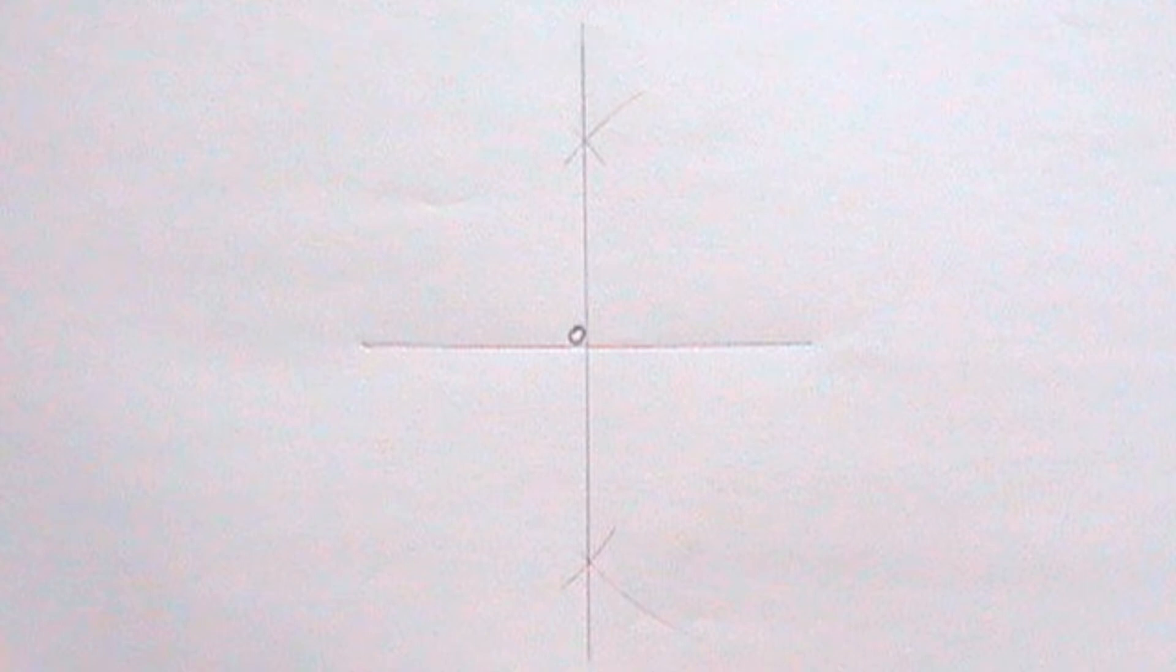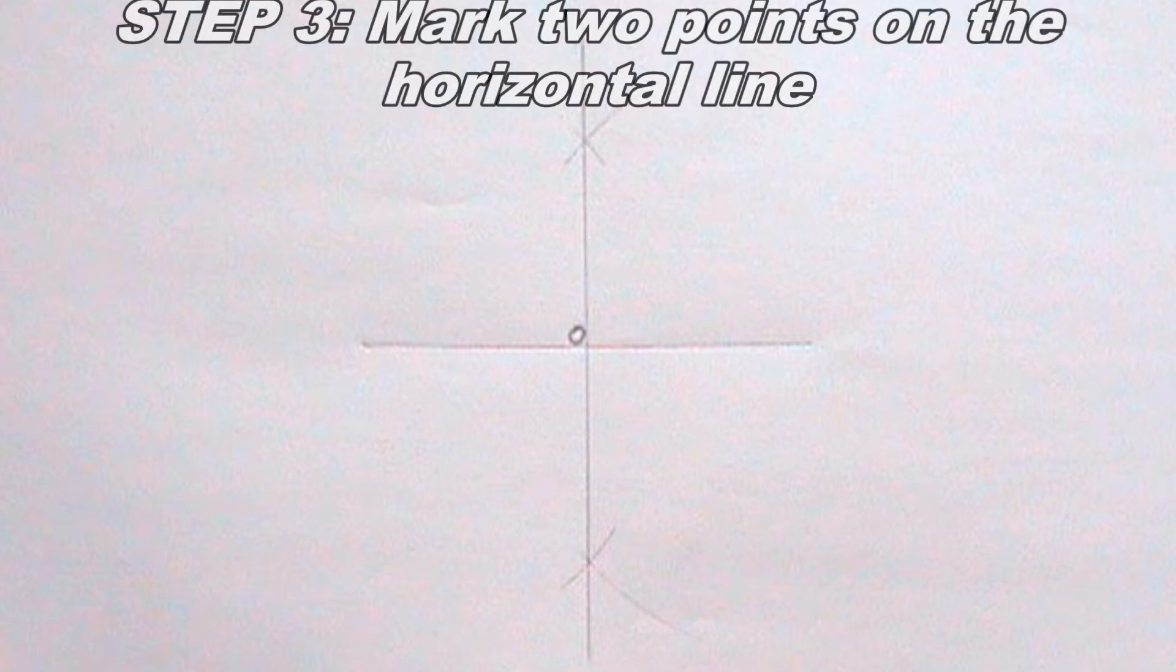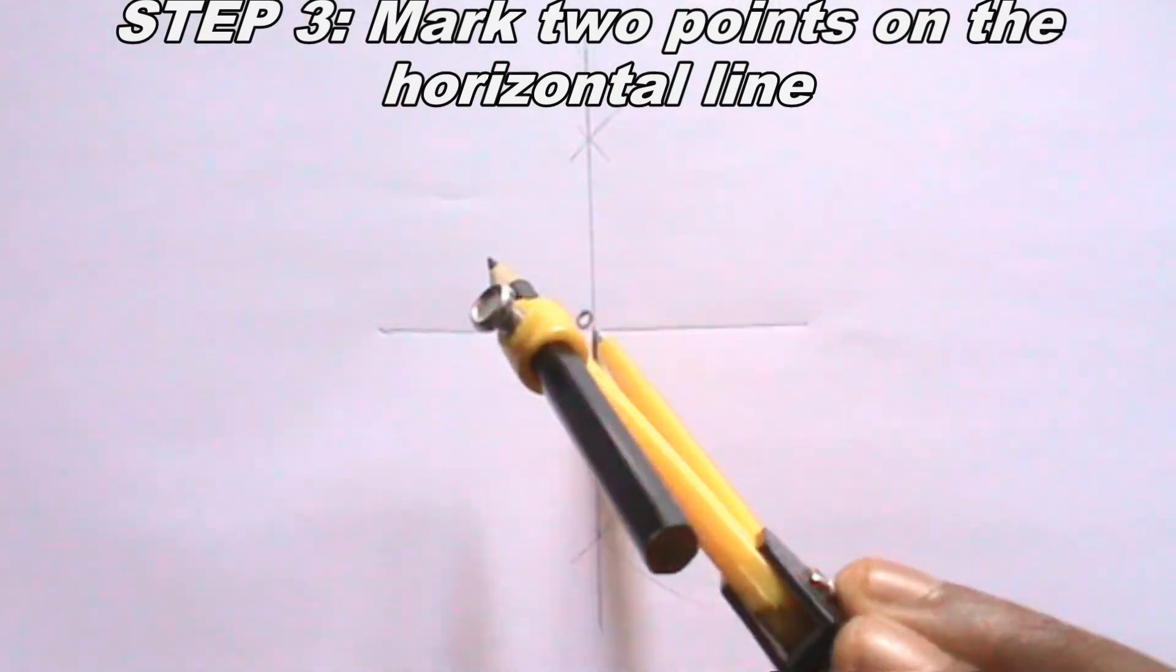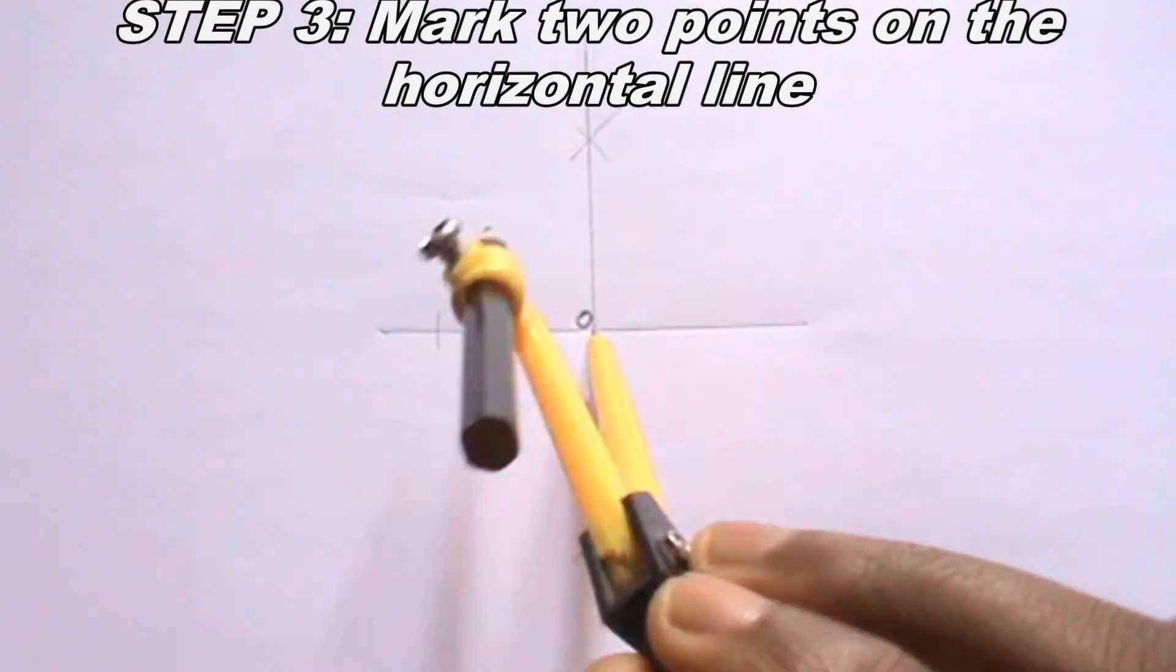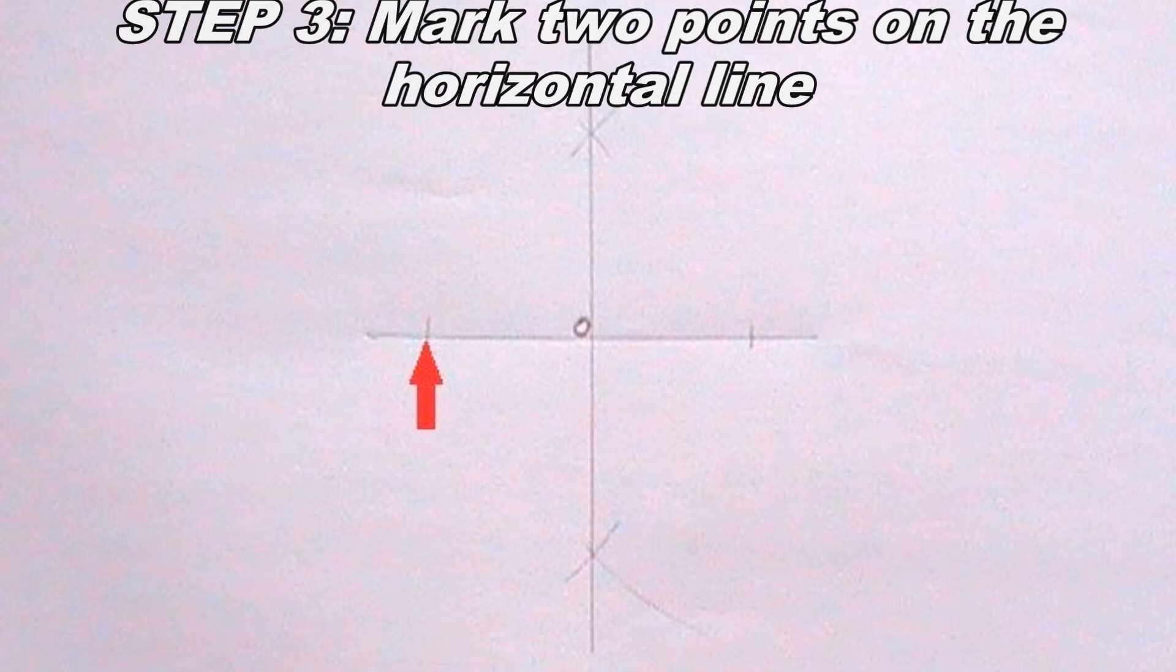Since I am done bisecting the line, the next step I will take is to place my compass on point O and mark two points on the first line I drew. One of the points should be at the right side of the line and the other at the left side. The distance of the two points to point O must be equal. Having marked the points, I will call the point at the left C, and the point at the right D.